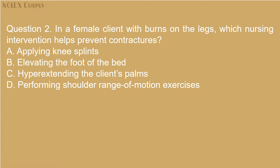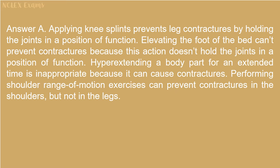Question 2: In a female client with burns on the legs, which nursing intervention helps prevent contractures? A) Applying knee splints. B) Elevating the foot of the bed. C) Hyperextending the client's palms. D) Performing shoulder range of motion exercises. Answer A: Applying knee splints prevents leg contractures by holding the joints in a position of function. Elevating the foot of the bed doesn't hold the joints in a position of function. Hyperextending a body part for an extended time can cause contractures. Performing shoulder ROM exercises can prevent contractures in the shoulders but not in the legs.